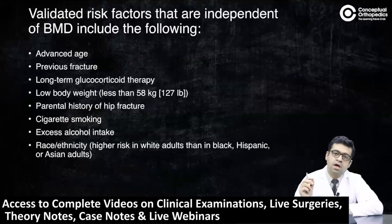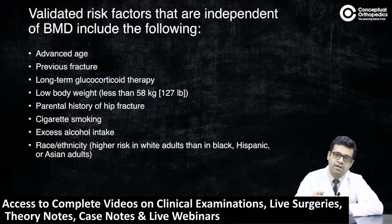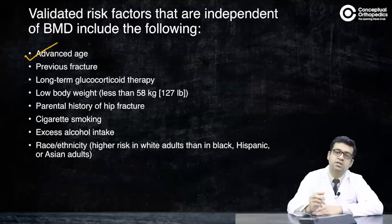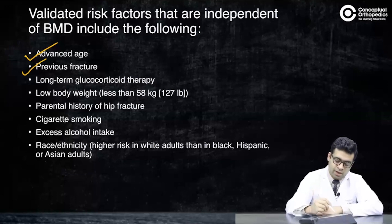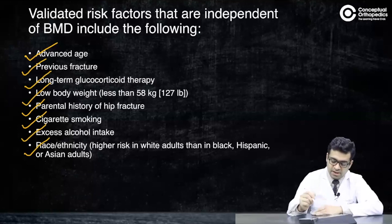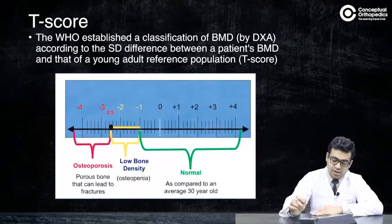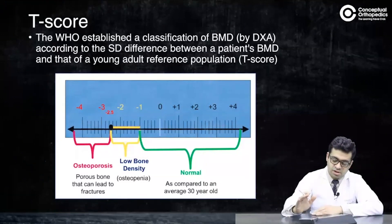What are the risk factors that should prompt DEXA evaluation in postmenopausal women or men aged 50 to 70? These include advanced age, history of previous fracture, long-term glucocorticoid therapy, low BMI, parental history of hip fracture, cigarette smoking, excessive alcohol intake, and race or ethnicity — the risk being higher in white adults compared to Black, Hispanic, or Asian individuals.